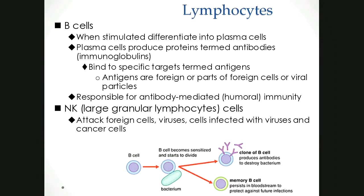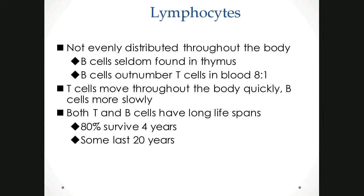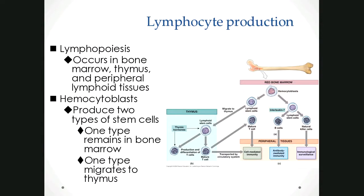Lymphocytes are the second most numerous cells in the blood. They're distributed in odd ways and they can last a really long time. It's important that they can, because they are the reason why we don't have to get vaccinated and booster shots constantly — as long as we have those memory cells that retain the ability to regenerate a lot of antibodies against a certain pathogen, we don't need to get boosters or vaccinated over and over again. Unfortunately, with flu, it changes so much that we have to.